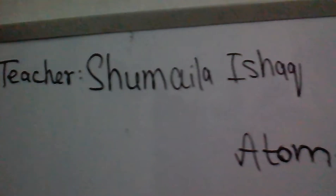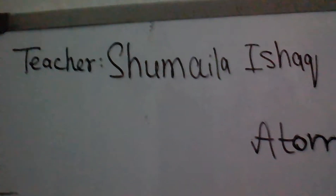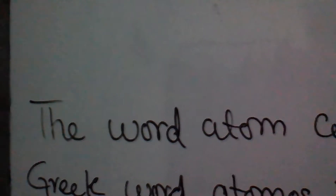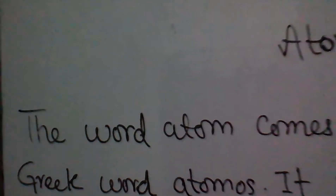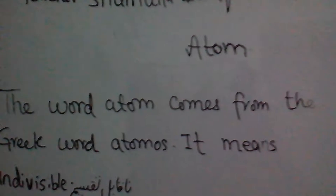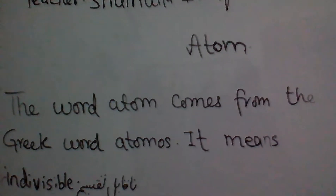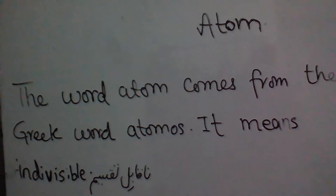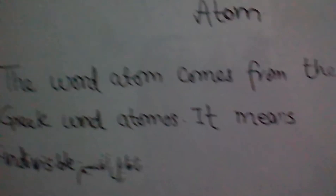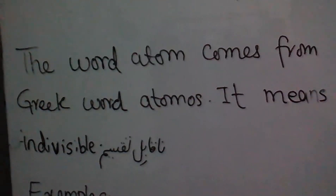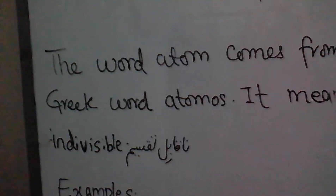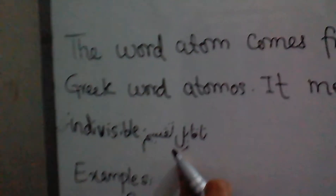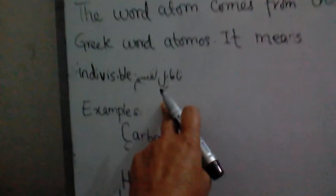I am your teacher Shumaylai Saab with a new topic: Atom. What is Atom? The word Atom comes from the Greek word called Atomos, and Atom means indivisible — that is, naqaveli takseem. Yani ke Atom wo cheez hai joh ke naqaveli takseem hai.